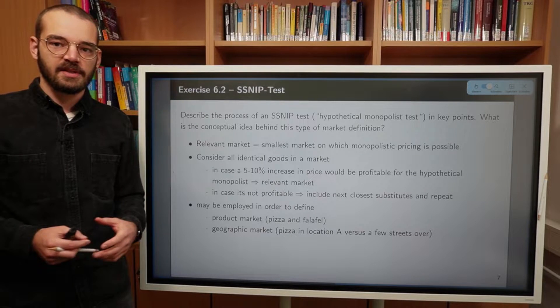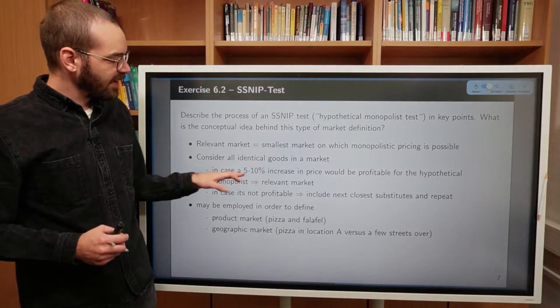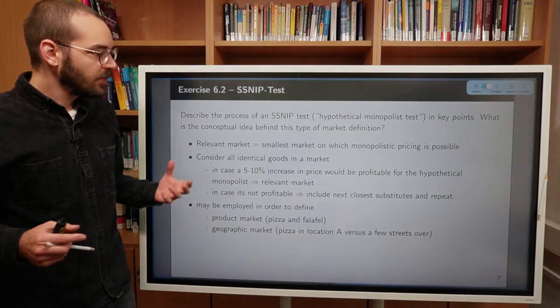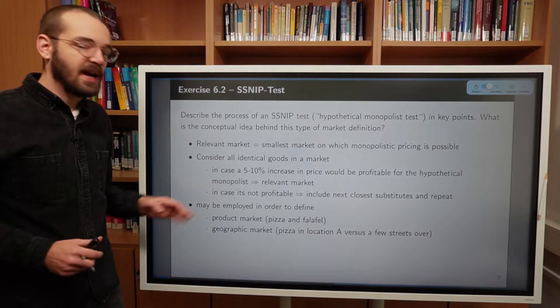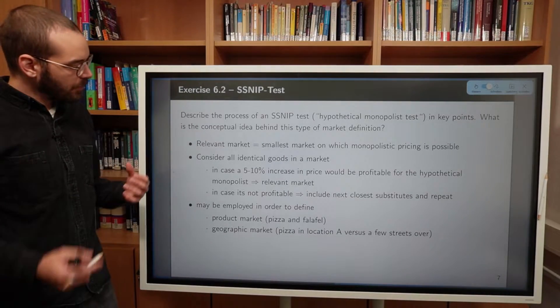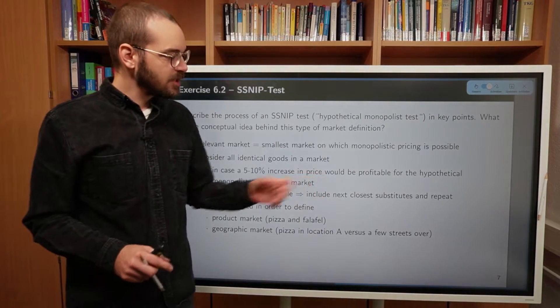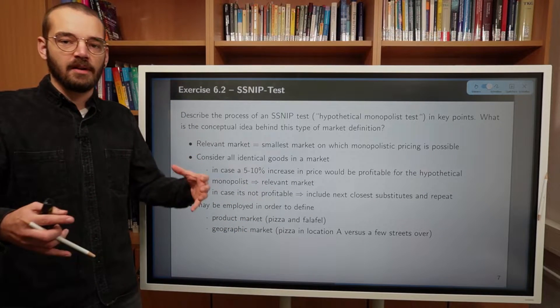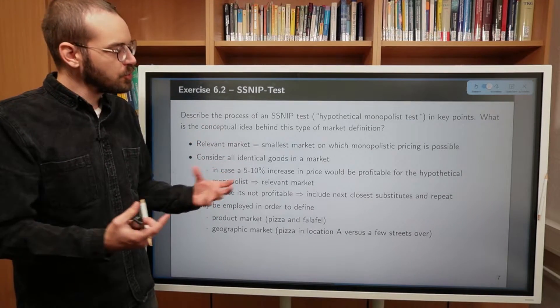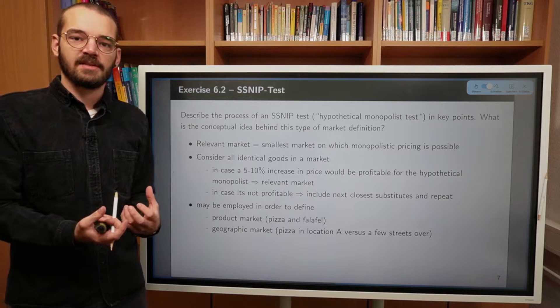We will now describe the process of the SSNIP test. We will first start by considering all identical goods in a market. And then we are going to analyze whether a 5 to 10% increase in price would be profitable for a hypothetical monopolist. And if we answer this question with a yes, then we have found the relevant market. Otherwise, if we need to answer this question with a no, then we will include the next closest substitute.